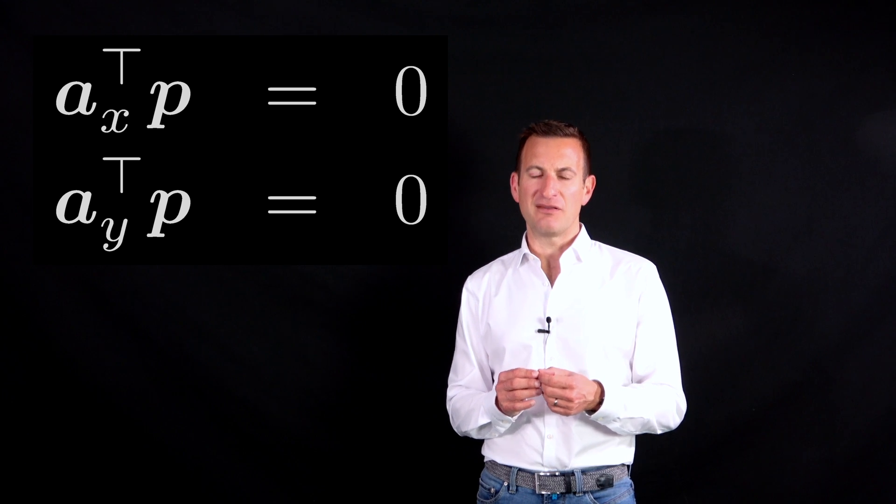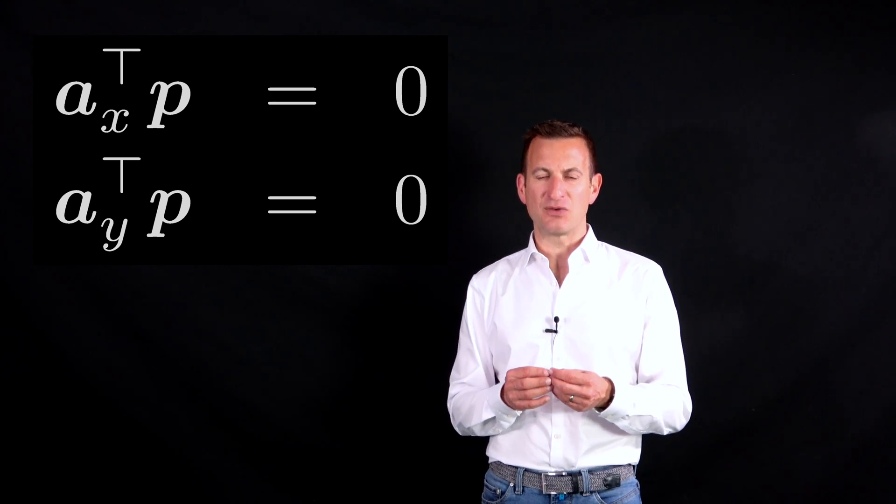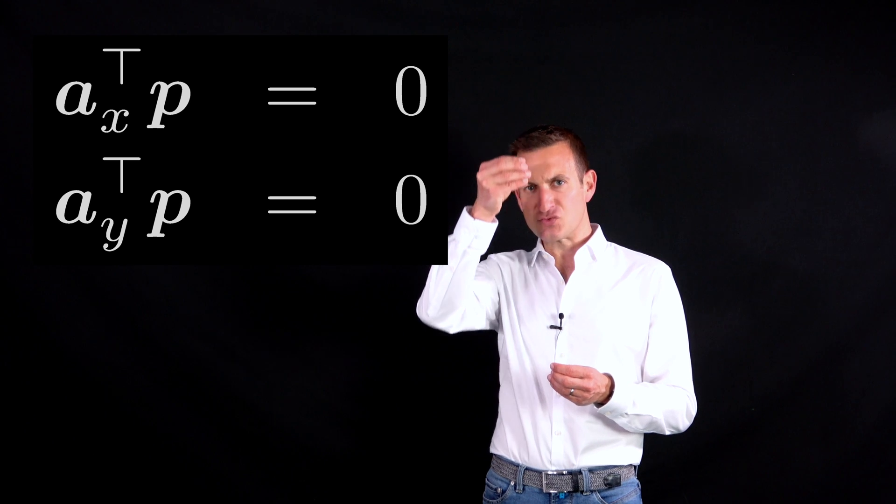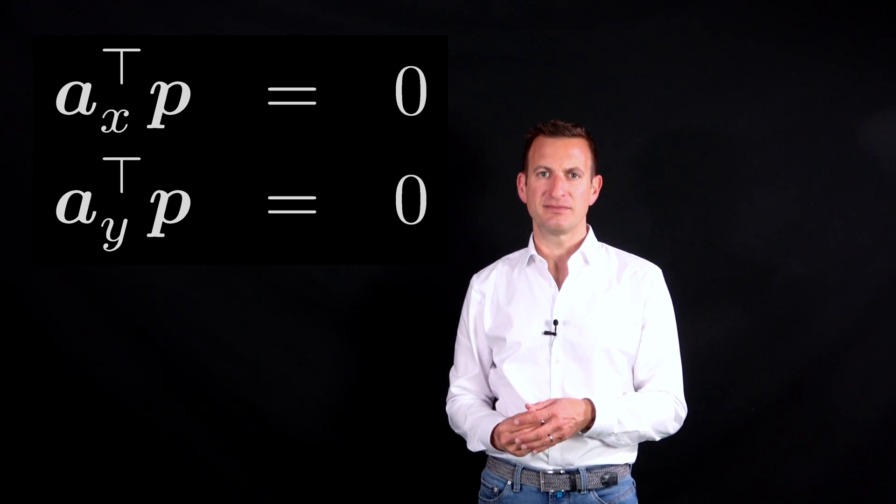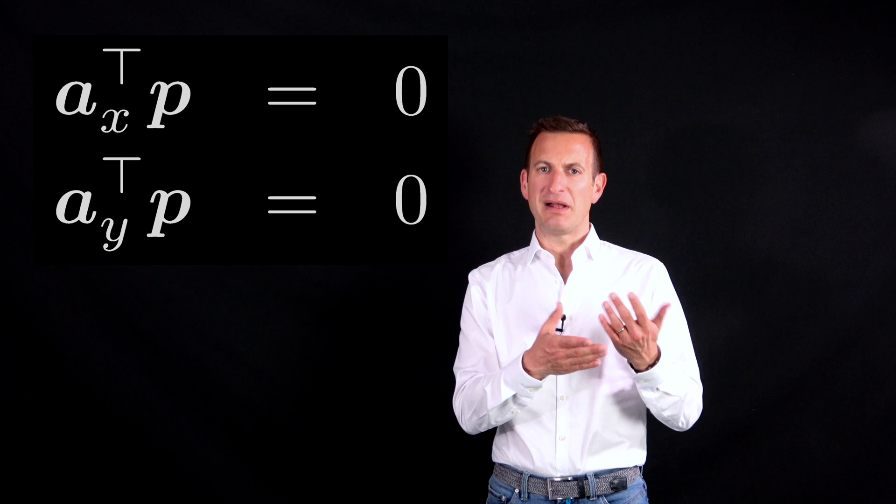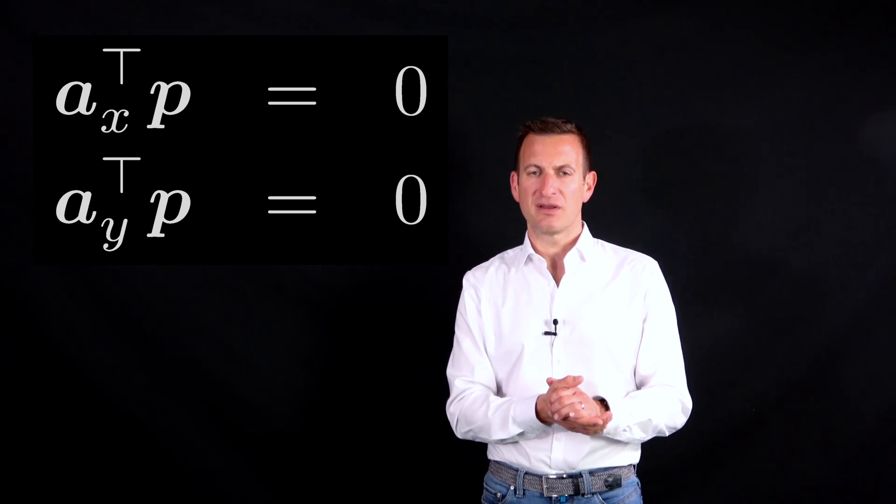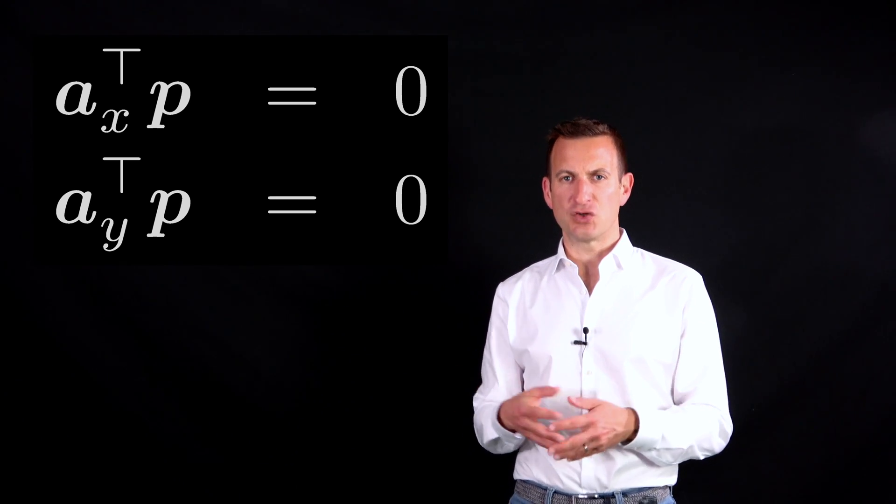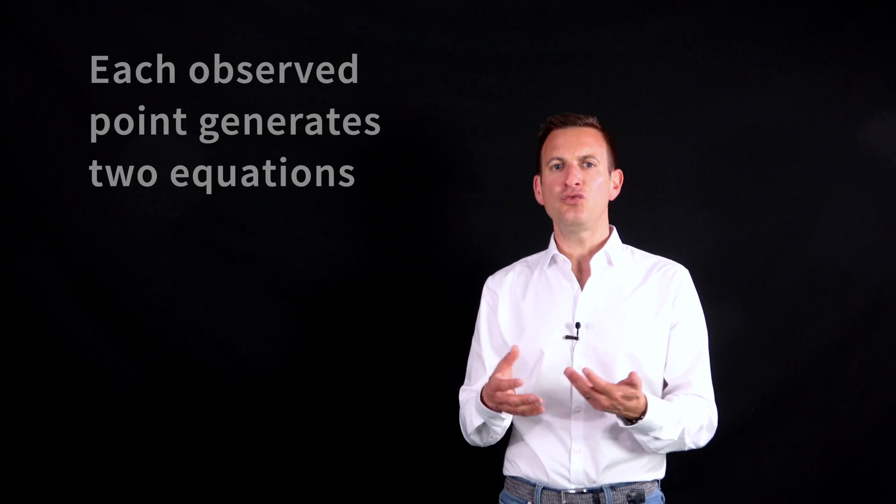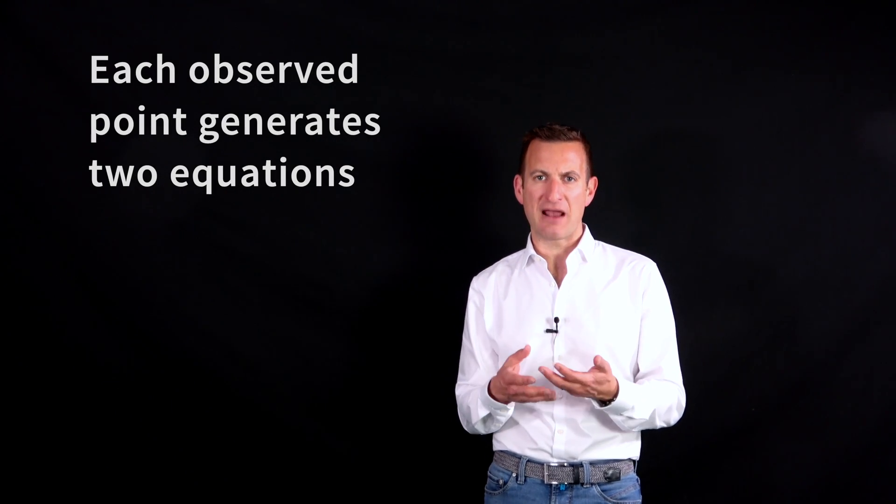So you can envision the vector P with the unknowns by taking all the 12 elements in your matrix and simply arranging it in a 12 dimensional vector. And then we can multiply this P with a coefficient vector A and this should be equal to 0. And I get two of those equations out from picturing every point.